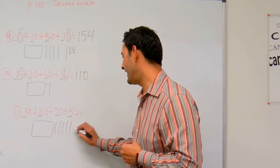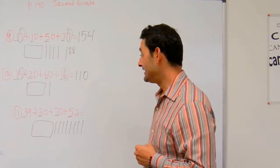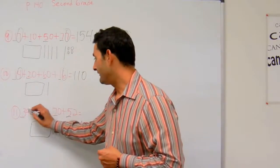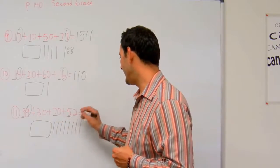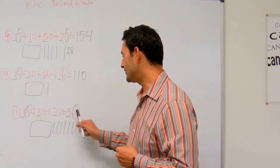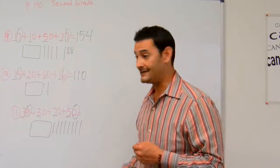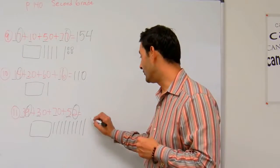1, 2, 3, 4, 5, 6, 7, 8. Now let's look at the ones. I've got a 9 here, 0, 0, and I have a 2. 9 plus 2 is 11. 11 is 1 bundle of 10 and 1, 1.